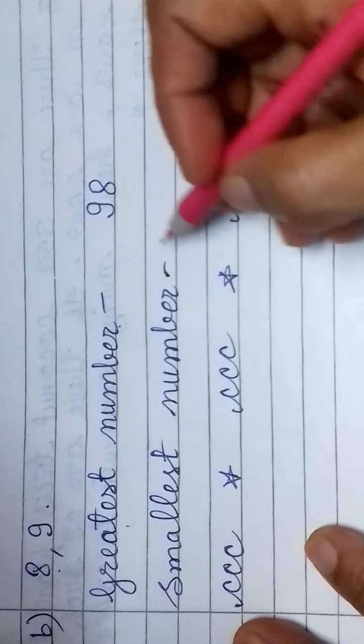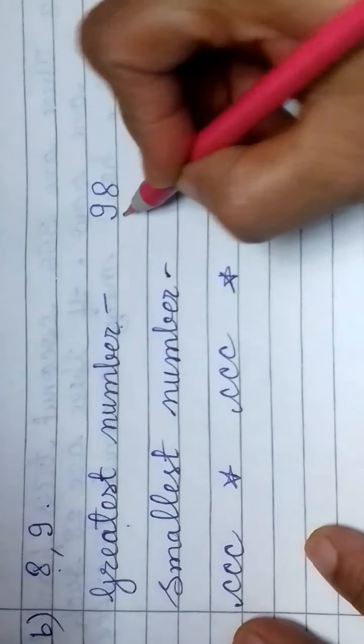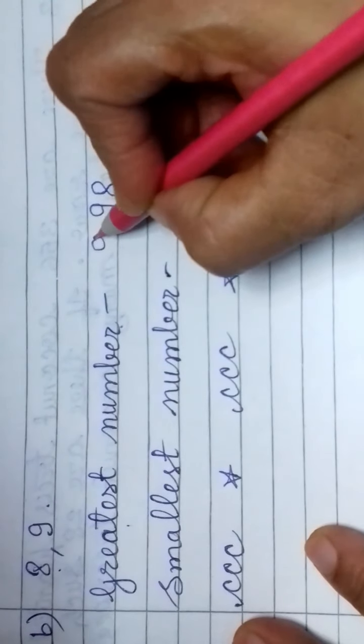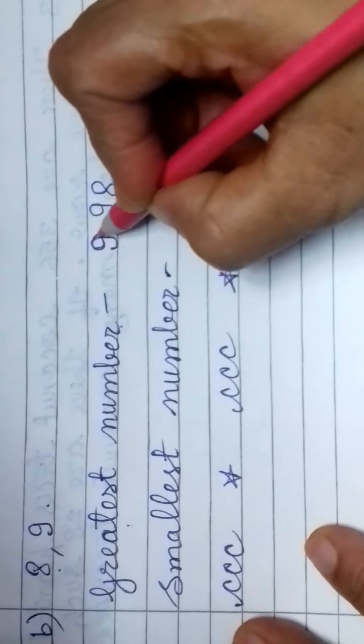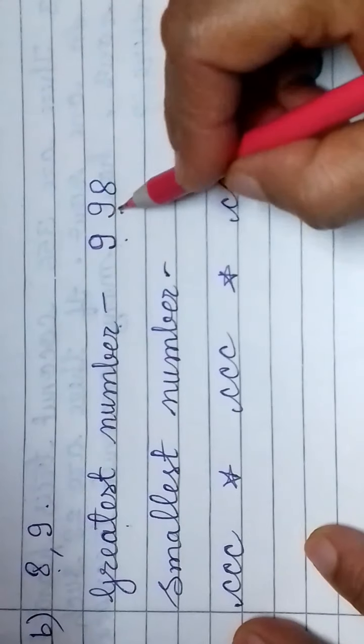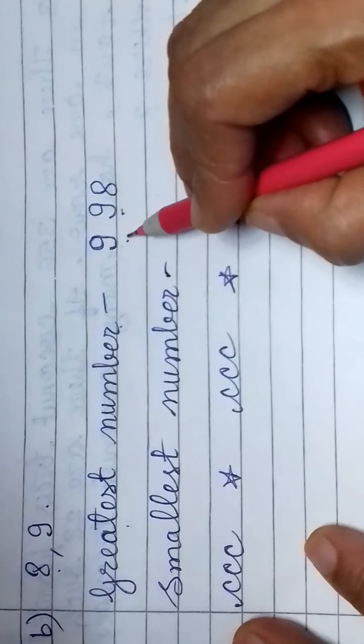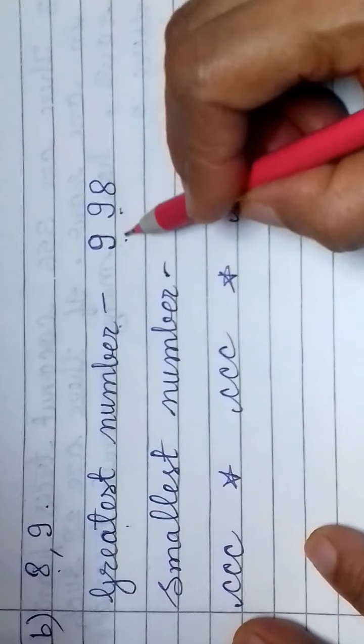So for greatest digit, we arrange them in descending order. First we write the greatest number 9, then 8. Then which digit we repeat? Greatest digit in the front, in the first place. We repeat the greatest digit.